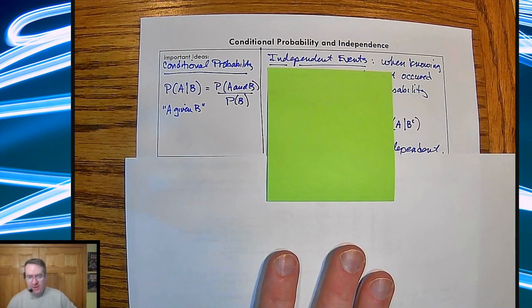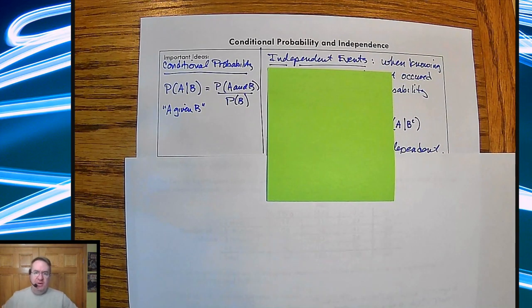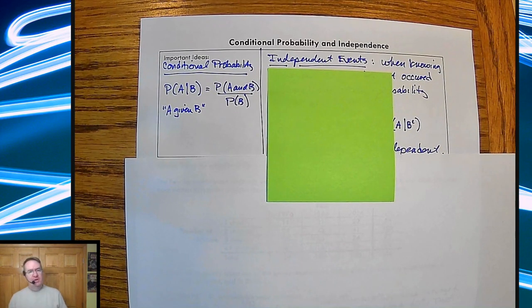Hey, welcome back. We're working through the conditional probability and independence unit from StatsMedic. This is the formalized part, so we're going to talk about what the math should be, and then we'll do a couple of examples.